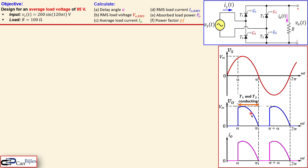When we reach the negative cycle of the input voltage, thyristors T3 and T4 will be forward biased, and T1 and T2 will be reverse biased. That is the other part of the waveform, which starts at pi plus alpha.